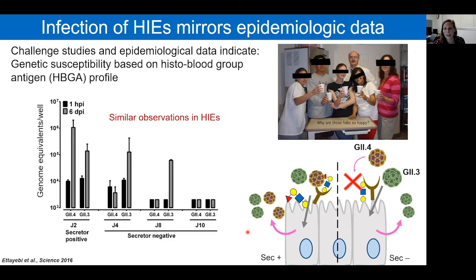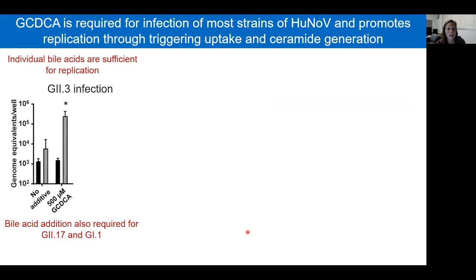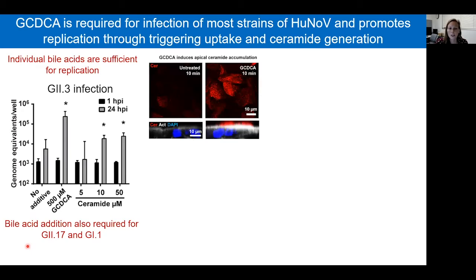Part of my project focused on identifying other factors required for GII.3 infection. This virus required bile for infection, and we went on to determine that individual bile acids are sufficient for replication. We worked with a specific bile acid, GCDCA. We showed robust GII.3 infection in the presence of 500 micromolar GCDCA. Other strains like GII.17 and GII.1 also require GCDCA for infection. We determined that the effect of GCDCA was on the cell itself.